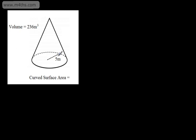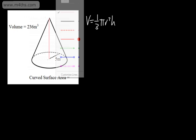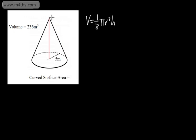Right, let's do one more. On this one, the volume is 236 meters cubed, and we need to find the curved surface area. We're given a base radius of 5 meters. This is a multi-step problem — what we're going to do is first drop a perpendicular down, and the formula for volume is one third pi r squared h. We need to first find the height, then use Pythagoras to find the slant height.